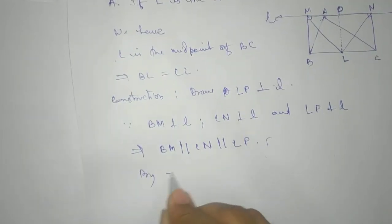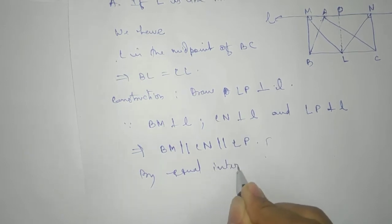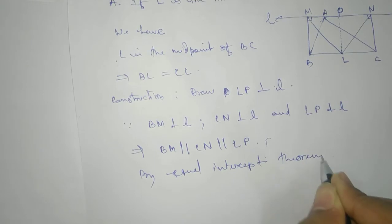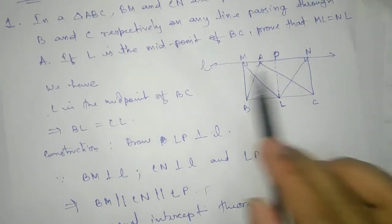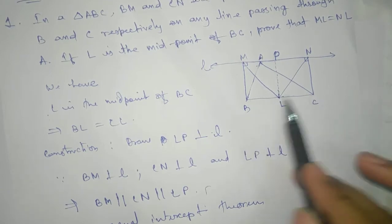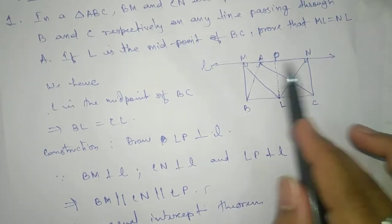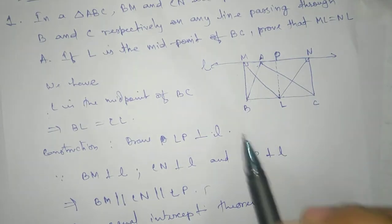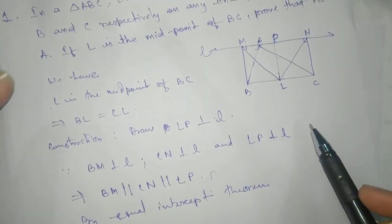Equal intercept theorem says that if three parallel lines are there, and if this part, BL equals to CL, then MP must be equals to PM. This is compulsory. By equal intercept theorem, intercept theorem says this.